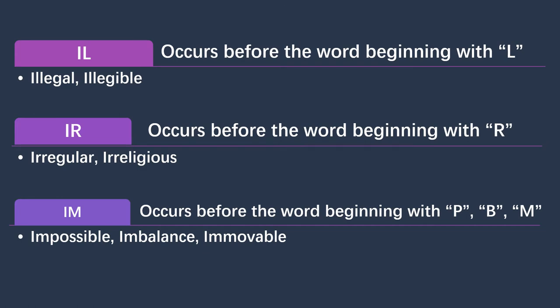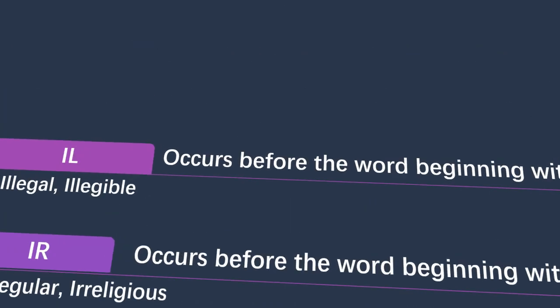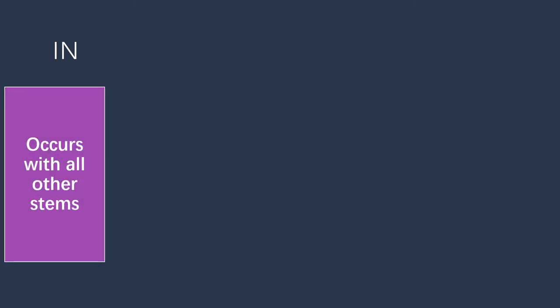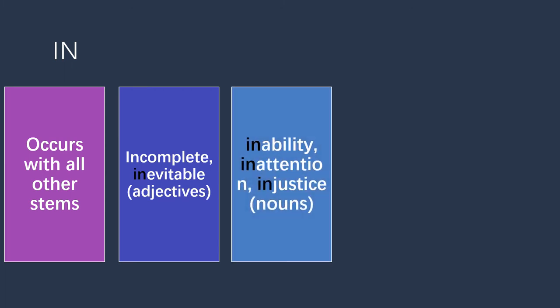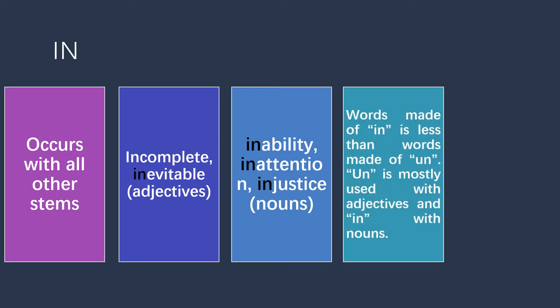Examples for 'im' are: 'impossible,' 'imbalance,' and 'immovable.' Another negative prefix is 'in,' which occurs with all words without any specific criteria. This prefix occurs with adjectives and also with nouns. Examples with adjectives are 'incomplete' and 'inevitable,' and 'in' also comes with nouns like 'inability,' 'inattention,' and 'injustice.'